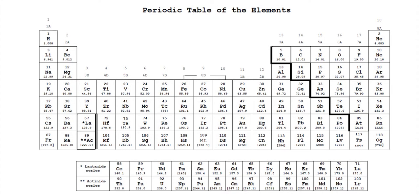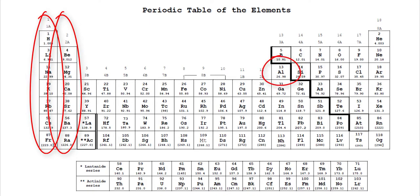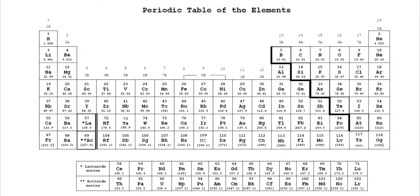The periodic table trend to be aware of is when looking at elements in group 1a, 2a, aluminum, and the non-metals in groups 5a, 6a, and 7a.